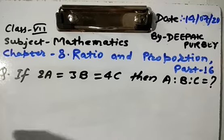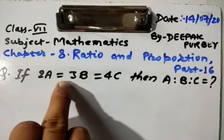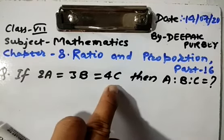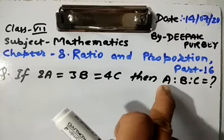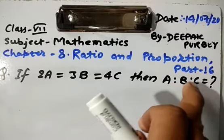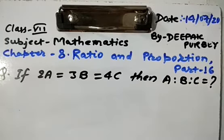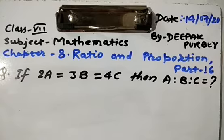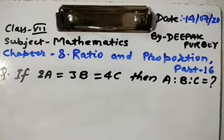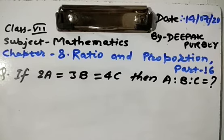Today's first question is: if 2a is equal to 3b is equal to 4c, then a ratio b ratio c — that is, a is to b is to c — is equal to what? We are given a relation between a, b and c, which is 2a = 3b = 4c, and we have to find the ratio between these quantities.